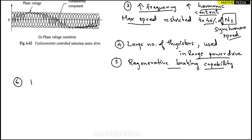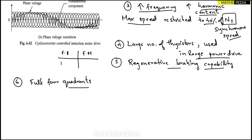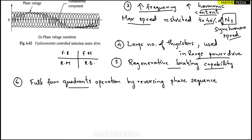The sixth point is that this drive can be operated in all four quadrants: forward motoring, forward braking, reverse motoring, and reverse braking. Four-quadrant operation is achieved by reversing the phase sequence of the motor terminal voltage.